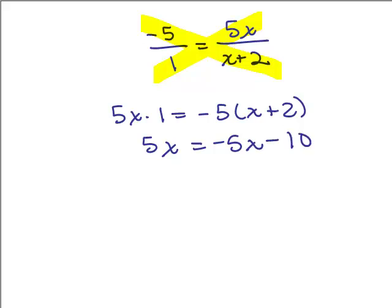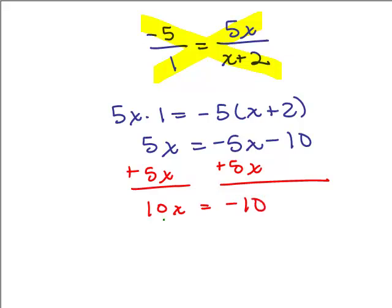So we're going to add 5x to both sides, and then we'll divide both sides by 10, and you can get your solution. So this is just an alternate way to get the solution. And of course, you would have to check negative 1 in the original.